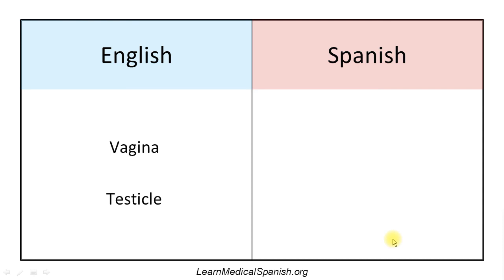Next word is vagina. La vagina. La vagina. That's a perfect example of a word that's spelled the same in English and Spanish — if you know how to pronounce the vowels and consonants, all you have to do is look at it and you'll know how to say it. I have a podcast episode that explains all of that.